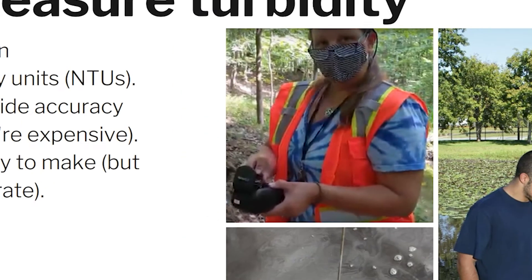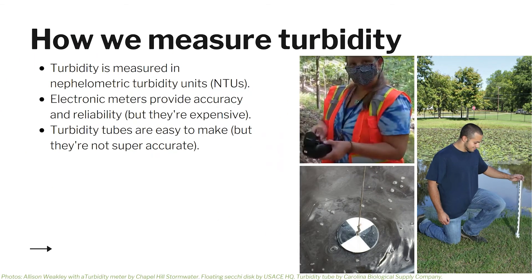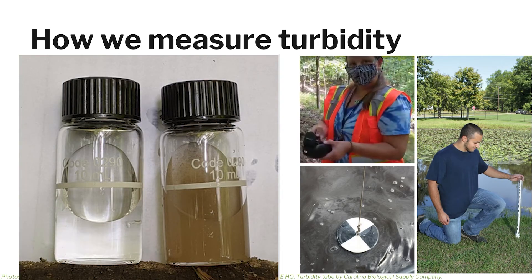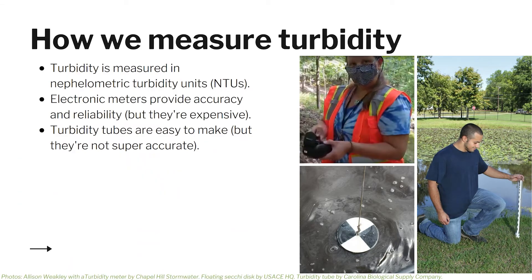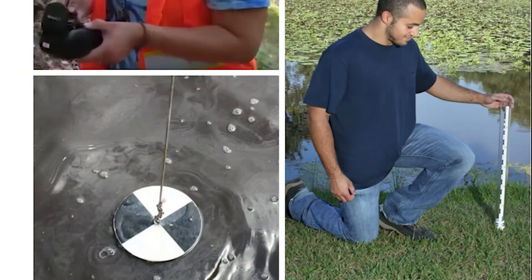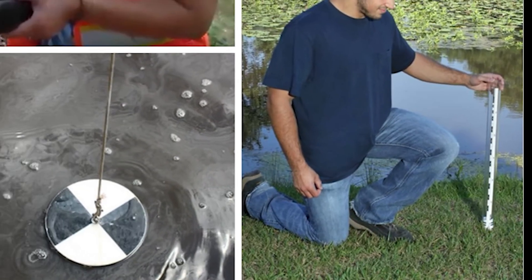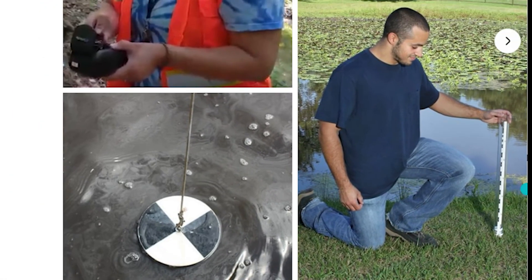Staff in our office use an electric turbidity meter. We take a sample of water in a small vial, and the meter measures how much light the particles in the sample scatter. This gives a very accurate measurement of turbidity, which is required when using data for regulatory purposes. Since we only have one of these meters, we use turbidity tubes with volunteers and school programs.